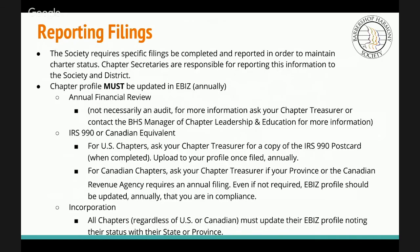For United States Chapters, ask your Chapter Treasurer for a copy of the IRS 990 postcard when it's completed. You can upload it to your profile once it's filed. For Canadian Chapters, ask your Chapter Treasurer if your province or the Canadian Revenue Agency requires an annual filing from your chapter. Even if it's not required, the eBiz Profile should still be updated so that you're in compliance with the Society.